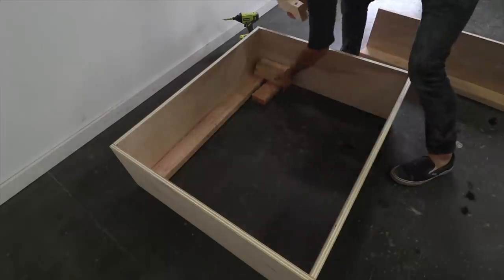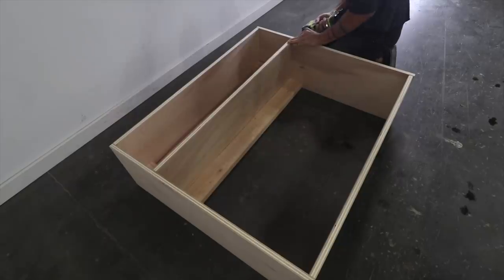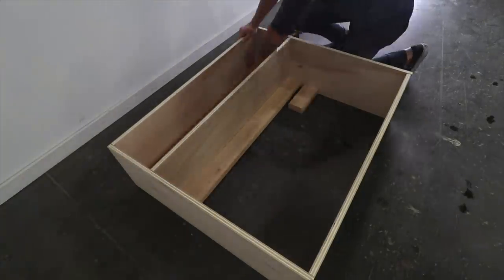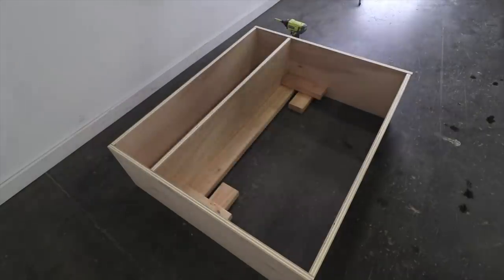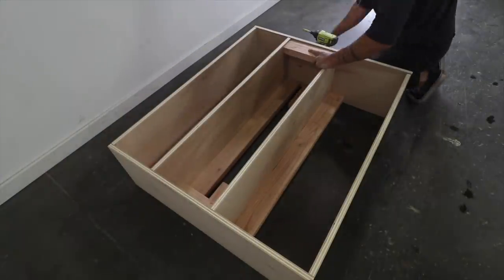I drove 2-inch long finish screws through the side panels and into both the 2x4s and to the edges of the plywood. If you're a beginner, I recommend pre-drilling the holes before screwing into the edges of the plywood. It'll just help ensure that the plywood doesn't split.